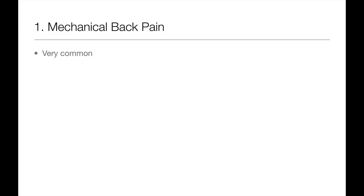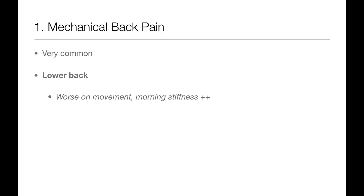Mechanical back pain is where you have back pain that's simply due to overuse of a normal structure, such as a muscle in the back. Mechanical back pain is typically in the lower back. It tends to be worse on movement and is typically relieved by rest. On examination, you may see a loss of the normal lumbar lordosis, which is a result of spasming of the injured muscles in this area, and on palpation of the paraspinal muscles there may also be tenderness.